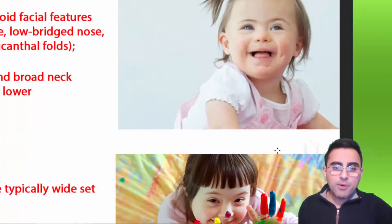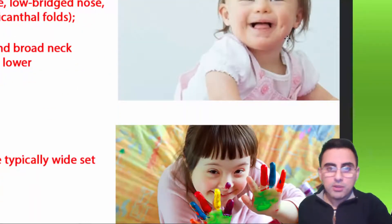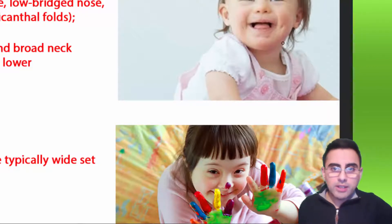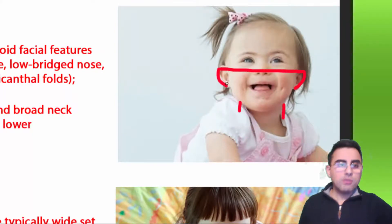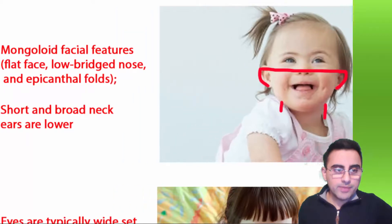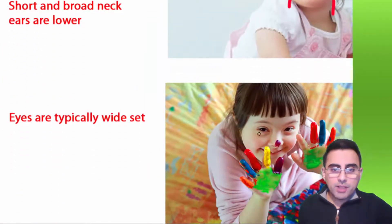Down syndrome individuals also have a broad and low neck, as you can see here. Their ears are in a low position. The eyes are typically wide-set, as you can see.